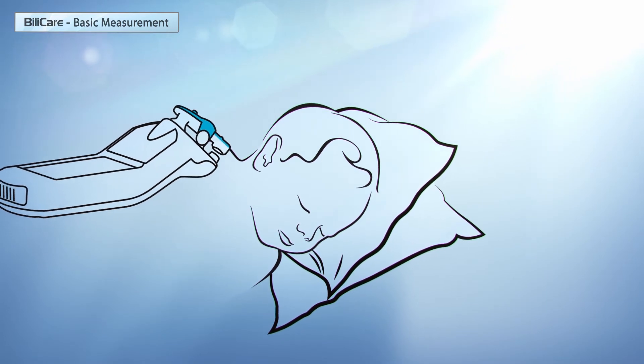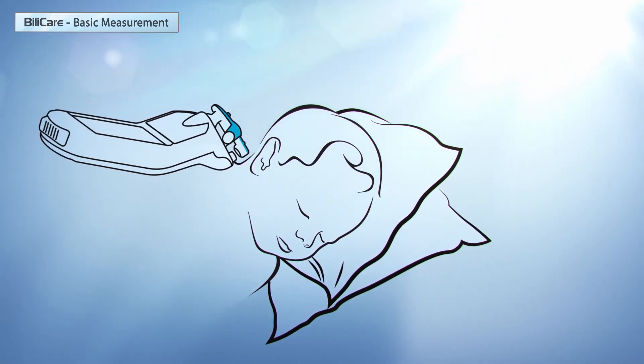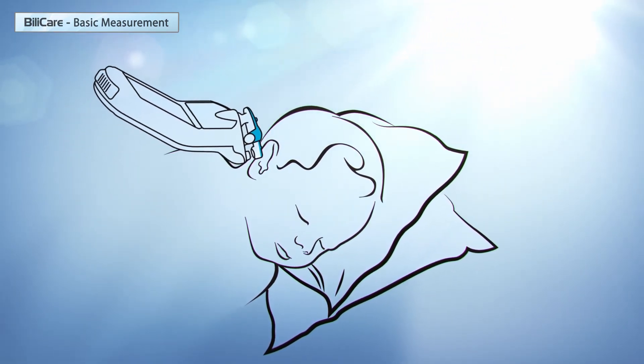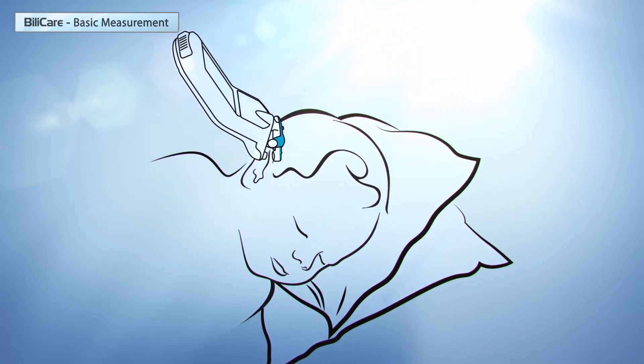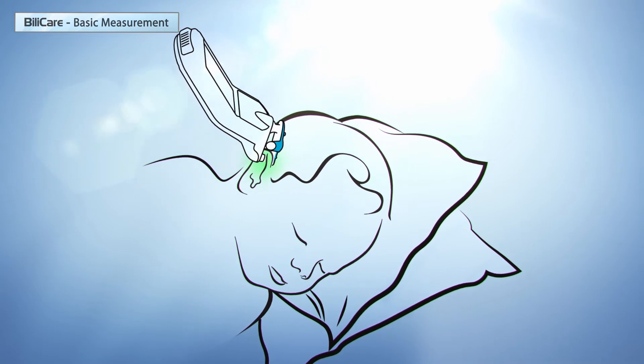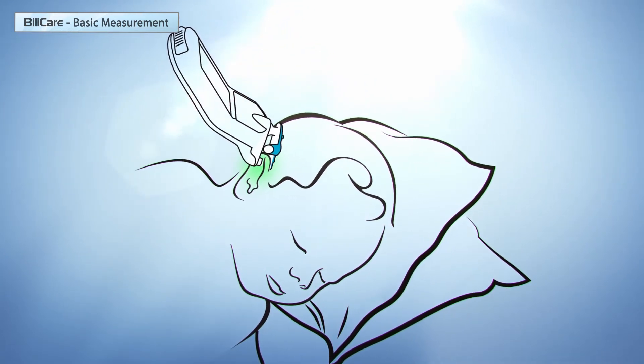The blue part of the clip should be positioned close to the head. Once the BILICARE is near the baby's ear, press on the clip's lever. Do not place your index finger on the clip until you are near the baby's ear and ready to place the clip on the ear.